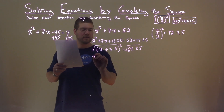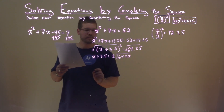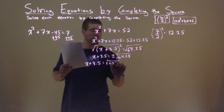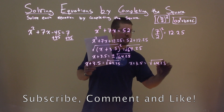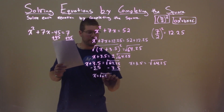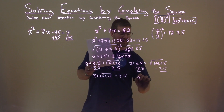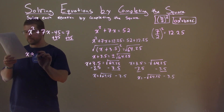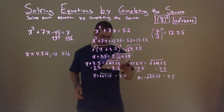We take the square root of both sides: x plus 3.5 equals plus or minus the square root of 64.25. Writing as two equations: x plus 3.5 equals positive square root of 64.25, and x plus 3.5 equals negative square root of 64.25. Subtracting 3.5 from both sides gives x equals square root of 64.25 minus 3.5, and x equals negative square root of 64.25 minus 3.5. Those two values are approximately 4.516 and negative 11.516 — those are our final answer.